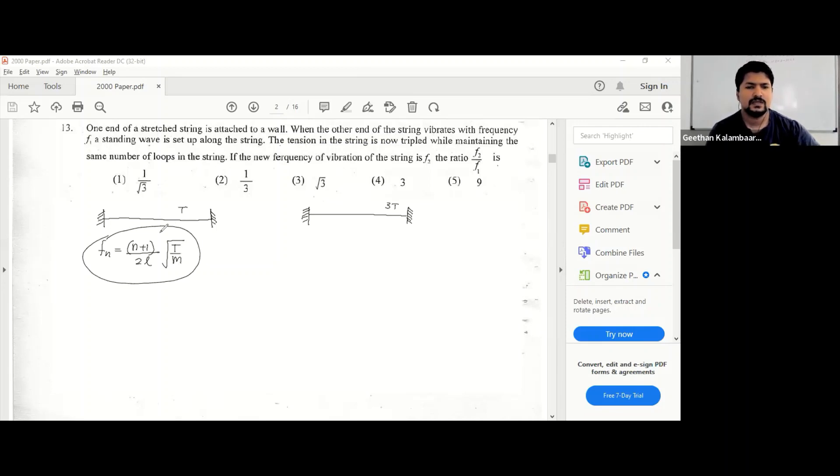This is the equation that you can use, right? So you apply it for the first one. The frequency is f1, here the frequency is f2, and it's the same overtone, same number of loops, so if it's n it's n.